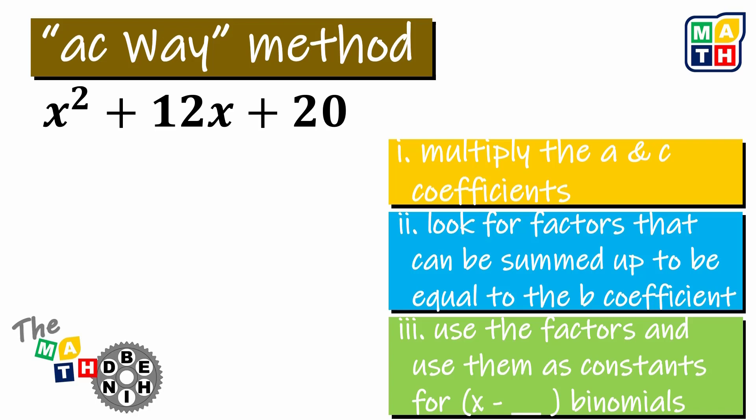There's actually a play of words here: aside from being called AC-Way, it is also called the easy way for finding factors. Let's use the given quadratic expression and solve for the factors using the AC-Way method on these three steps.